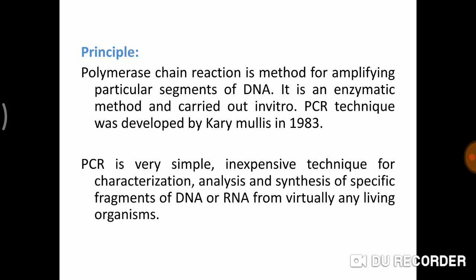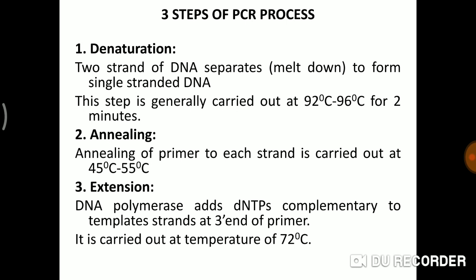PCR is used for characterization, analysis, and synthesis of specific fragments of DNA or RNA from virtually any organism. There are three steps in the general PCR process: first, denaturation; second, annealing; and third, extension, which we can also call elongation.